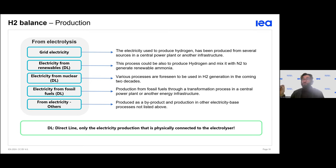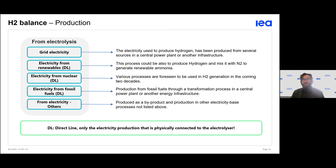In the questionnaire, we distinguish hydrogen by its source. For electrolysis, hydrogen can come from the full grid, from renewable energy, from nuclear energy, and so on.